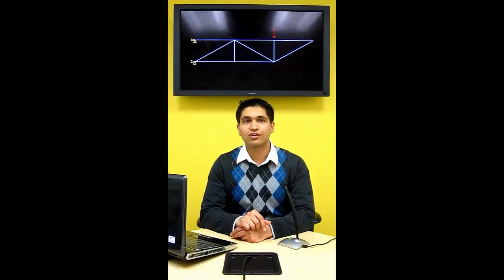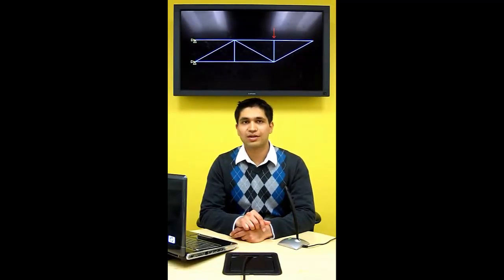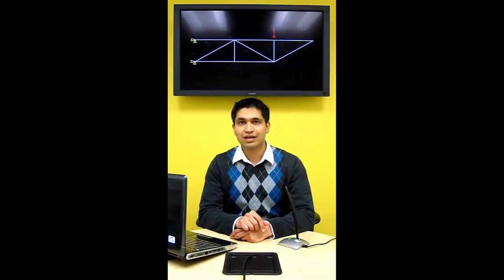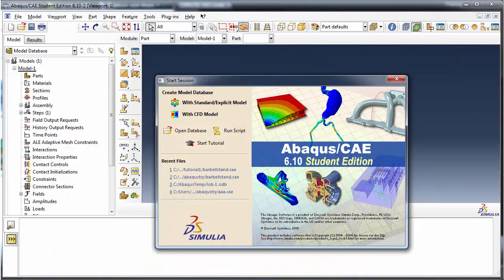We do this using a dynamic analysis step. This can be achieved in Abacus Standard by specifying an implicit dynamic procedure or in Abacus Explicit by specifying an explicit dynamic procedure. We are going to use Abacus Explicit as it is generally the best choice for problems with short dynamic response times or problems in which you are interested in the transient behavior.